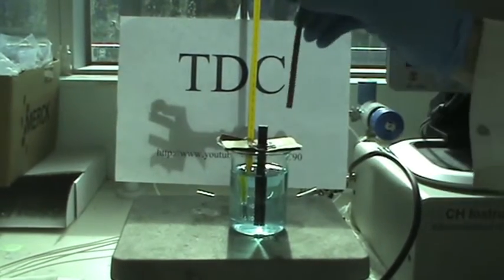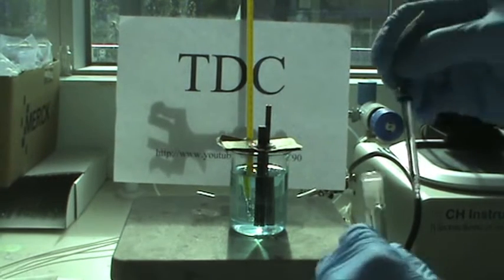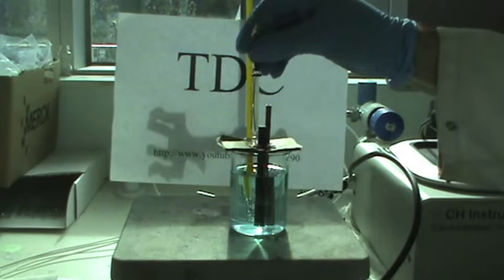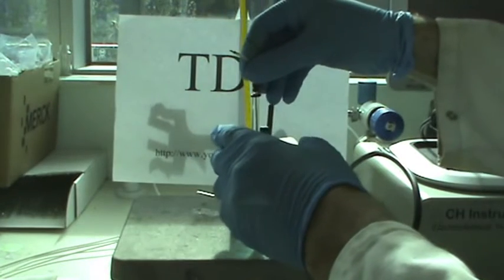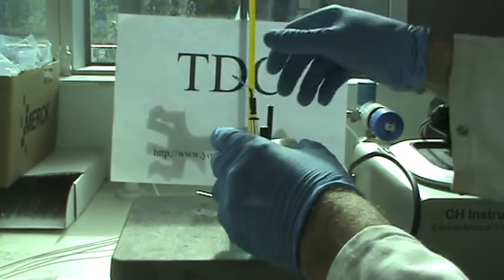Followed by the copper rod counter electrode to the top right side of the cell, and then the silver-silver chloride reference electrode to the upper left side of the cell, making sure the distances of the electrodes are around 0.5cm apart.